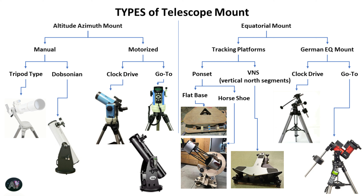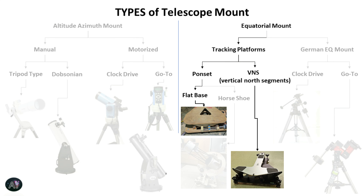I tried to classify all the different types of mounts for the telescope. Note that this is a broad-level classification — there are many other parameters such as single or dual axis, whether it has encoders or not, so I didn't go into that level of granularity. In today's video we are going to focus on the flat base and VNS type of equatorial platform.